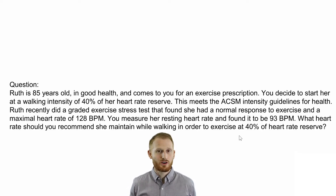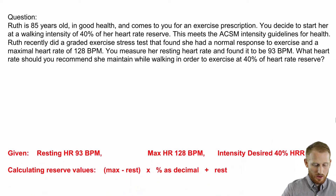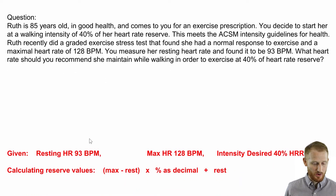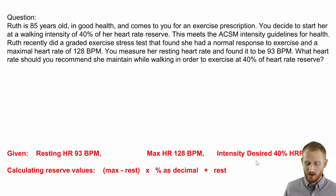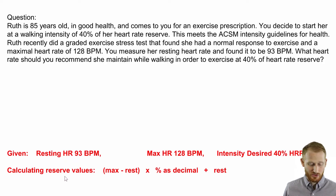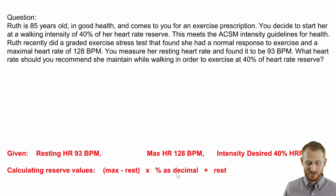What we need to calculate is her heart rate at 40% of heart rate reserve. Here are our given values: her resting heart rate was 93 beats per minute, her maximum heart rate from the stress test was 128 beats per minute, and her exercise intensity is 40% of heart rate reserve per ACSM guidelines. The reserve calculation — the same for all reserve calculations — is: maximum value minus resting value, multiplied by the decimal version of your percent intensity, then add back the resting value.